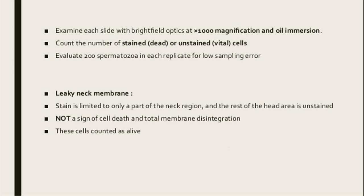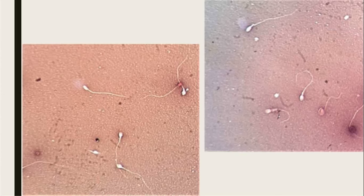Leaky neck membrane: stain is limited to only a part of the neck region while the rest of the head region is unstained. This is not a sign of cell death or total membrane disintegration, so these cells are counted as alive. Stained cells are dead sperms; unstained cells are vital or living cells; and cells stained only in a small portion near the neck region are counted as alive cells.